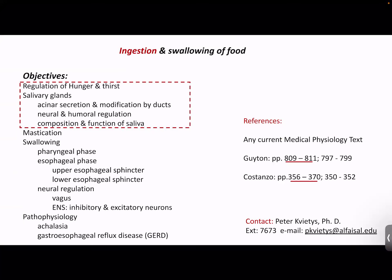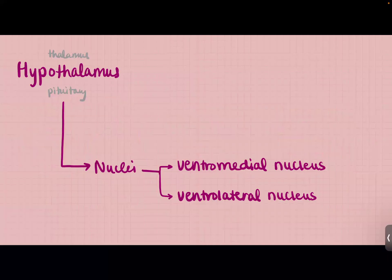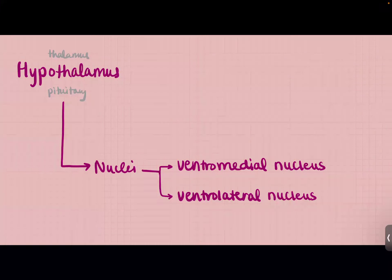I'm going to start by describing the hypothalamus. We have a small but very important region in our brain known as the hypothalamus. It's located below the thalamus and above the pituitary gland. The hypothalamus contains a bunch of nuclei, which is a collection of cell bodies — or the cell bodies of neurons. A nucleus is a collection of cell bodies that work together for a certain function.